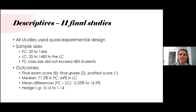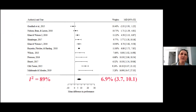The median percentage in the flipped class was 71.5% for the final outcome and 64% in the lecture class. Mean differences between flipped and lecture class ranged between −2.33% and 16.9%. The negative 2.33 was for just one study in which the lecture section had slightly higher final exam scores than the flipped section. The Hedges' g standardized mean differences ranged between −0.16 and 1.14, so effects ranged from small to large.